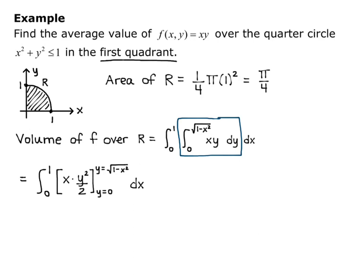I plug in my upper bound, y equals square root of 1 minus x squared, minus my lower bound, y equals 0 plugged in, and I get the integral of x times 1 minus x squared over 2 dx. When I plugged in the y equals square root of 1 minus x squared, the y squared part canceled out the square root.